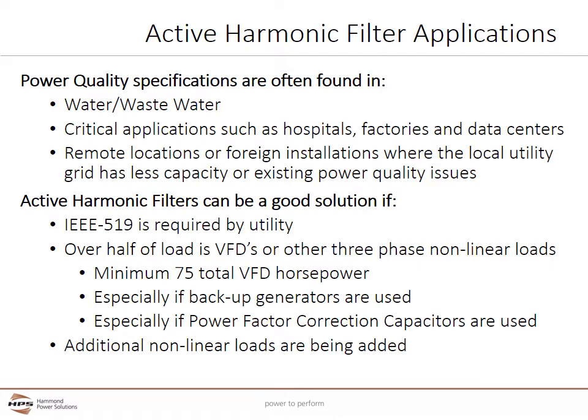Power quality specifications are often found in water and wastewater installations, as well as critical applications such as hospitals, factories, and data centers, which have many three-phase nonlinear loads that need to be corrected. Active harmonic filters are often deployed in remote locations or foreign installations where the local utility grid has less capacity or existing power quality issues — for example, an oil field with multiple wells in a rural location with a power grid never designed to supply such large three-phase loads. Active harmonic filters can be a good solution if IEEE 519 is required by the utility, and most utilities now monitor for IEEE 519 compliance.